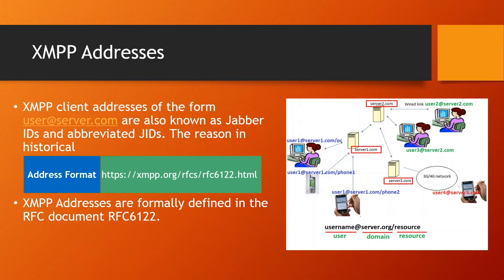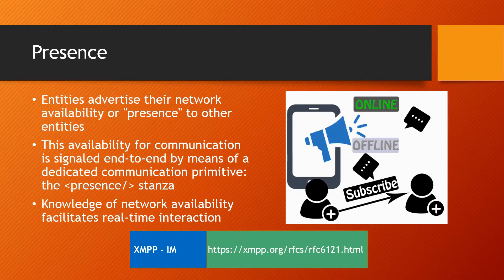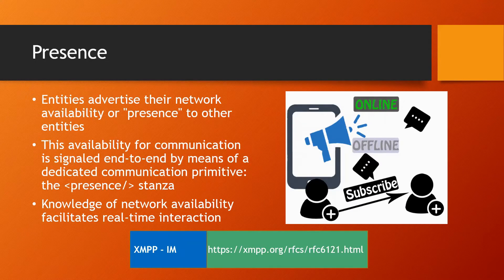Now that we know how addresses work in XMPP, let's look at presence. Presence is a way for an XMPP entity to advertise its online or offline status. This online status is communicated using an XMPP primitive called a presence stanza. Online status information is propagated through the XMPP network using this communication primitive. Presence is covered in RFC 6121, and you can go look at it to see how it works.